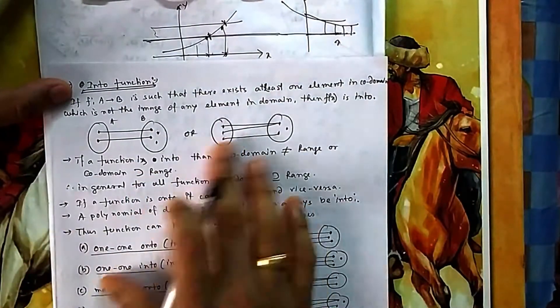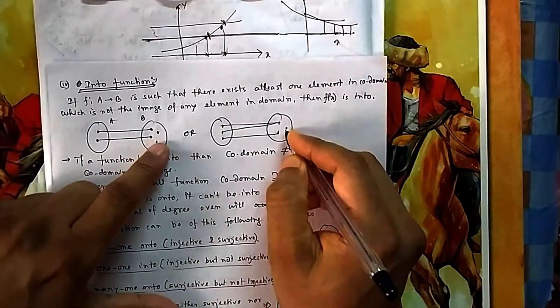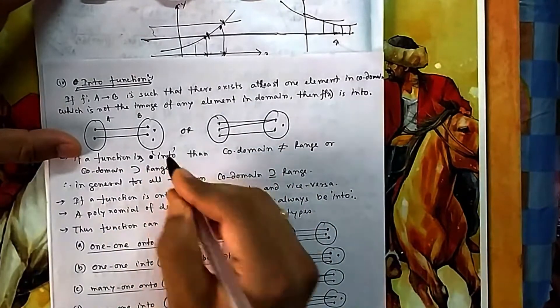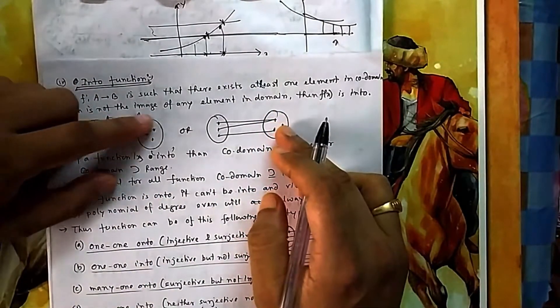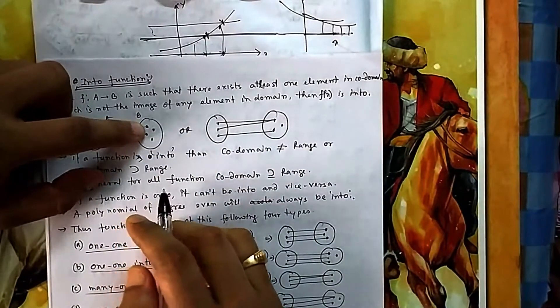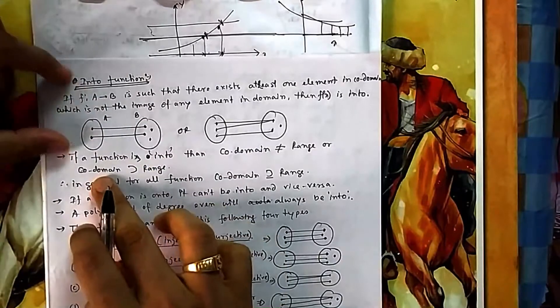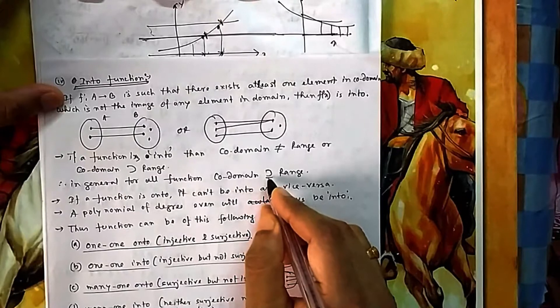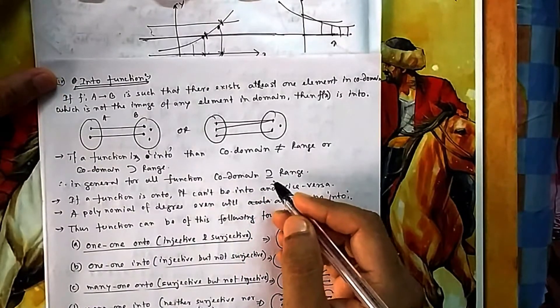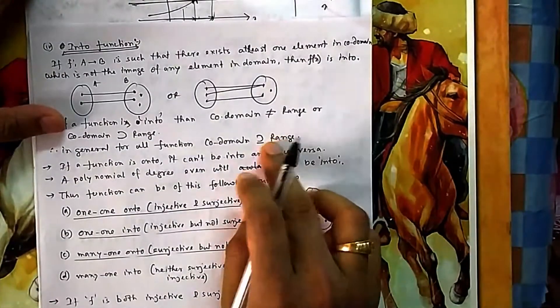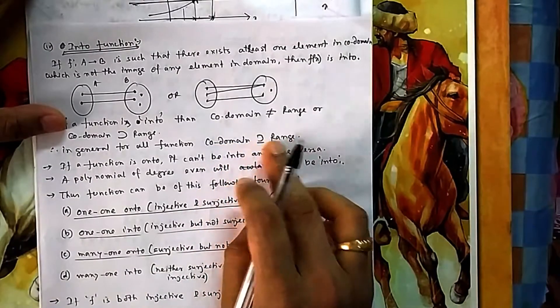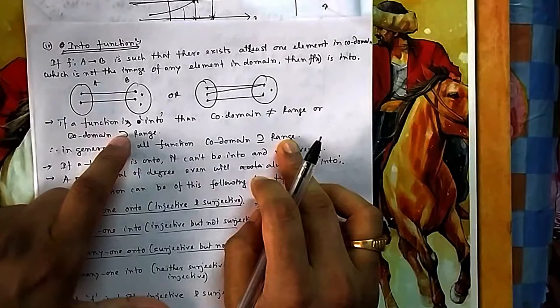In an into function, some y's are left alone. If a function is into, the co-domain and range will not be equal — the co-domain has all elements but the range has only a subset. So co-domain is a proper superset of range, or range is a proper subset of co-domain, because the equal-to case is never possible for into functions.